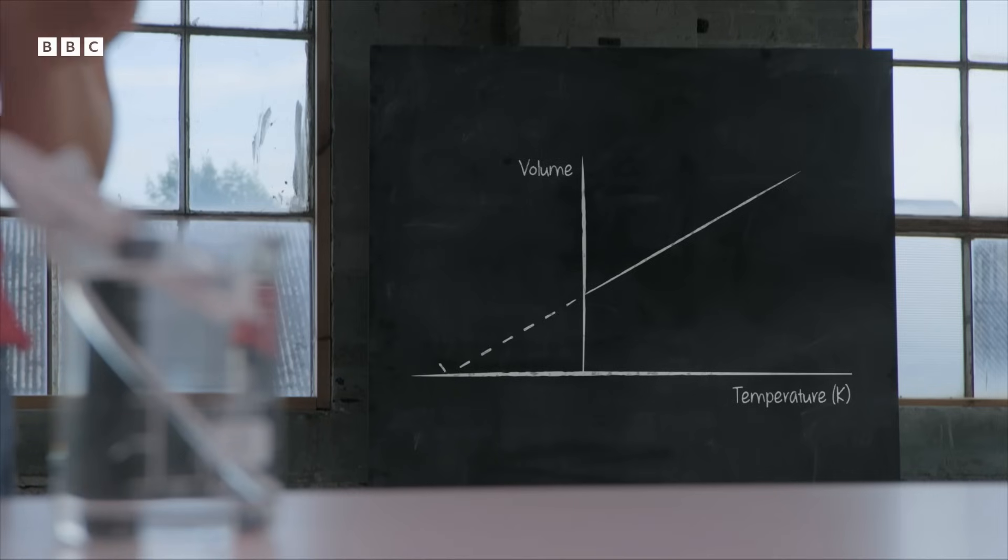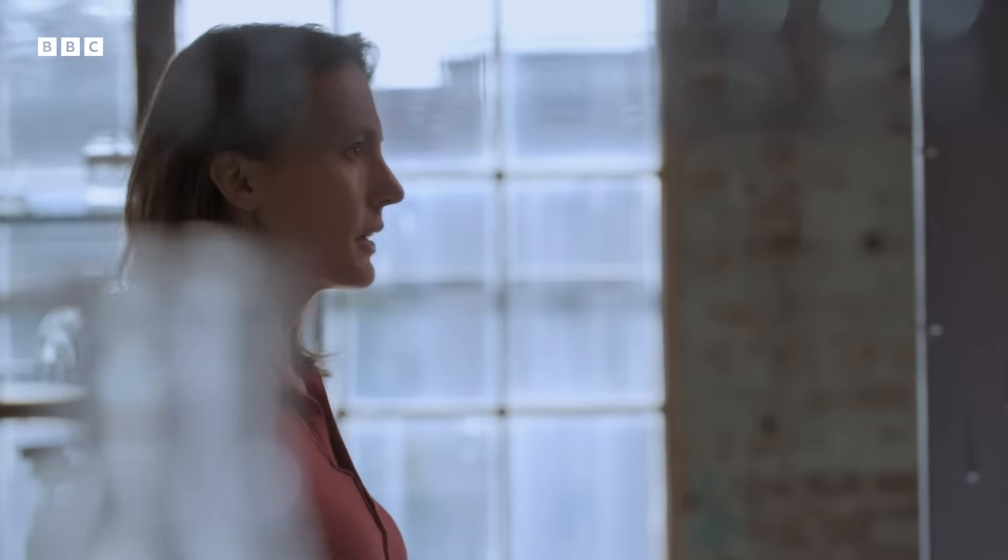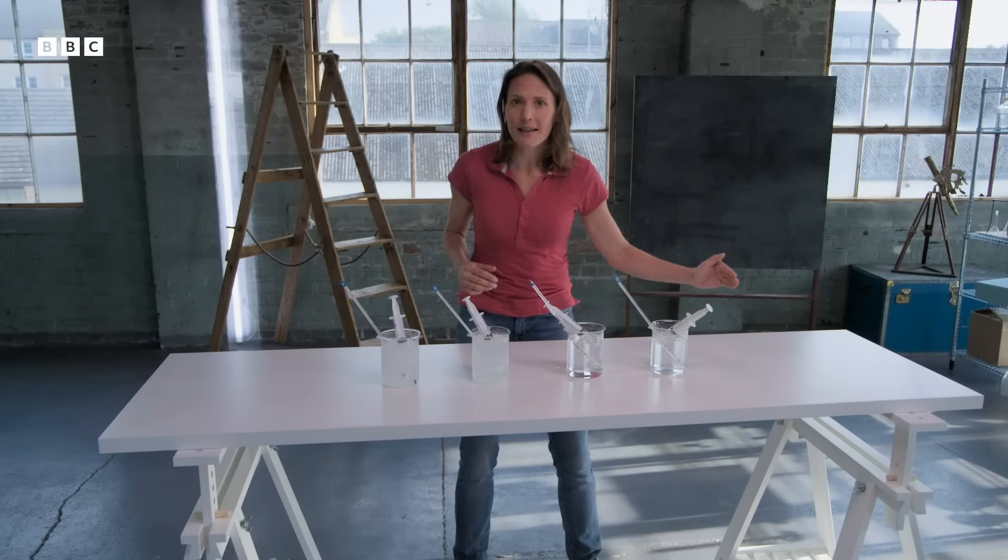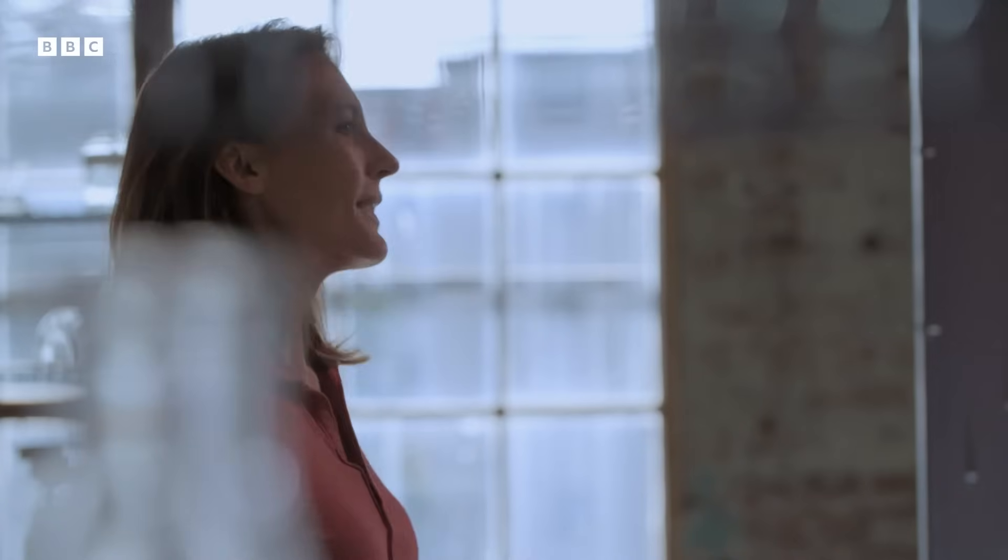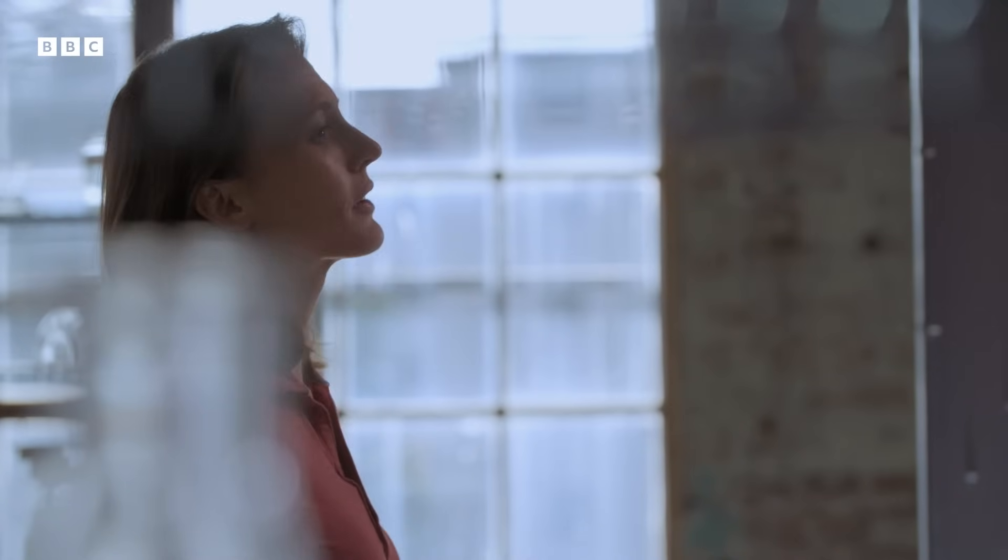Because at some point, even though they couldn't see it, if that line kept going it was going to pass through zero volume. And at that point and past that point, what happens to the temperature? What does it mean? And that was the first hint that there might be a limit on just how cold you can go.